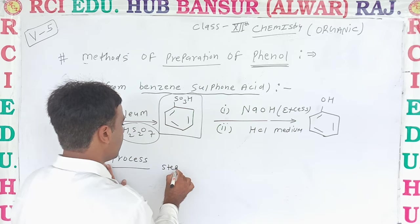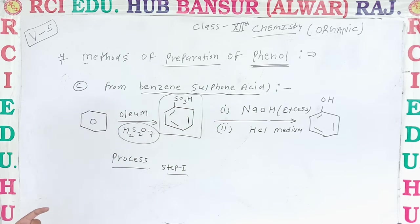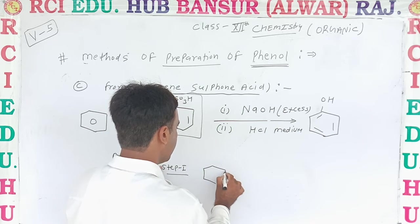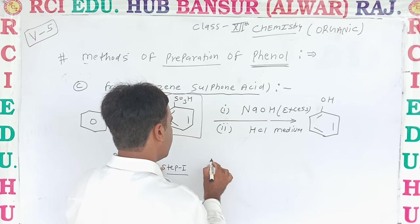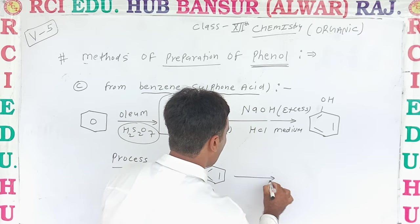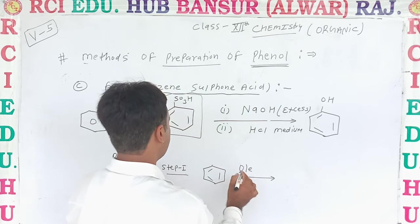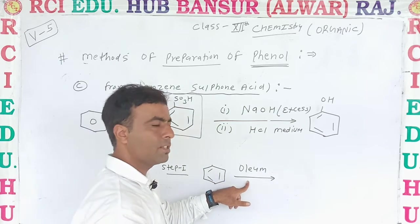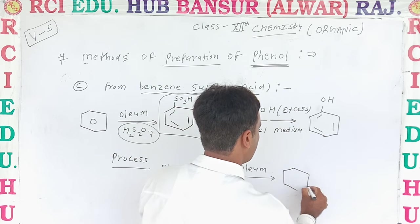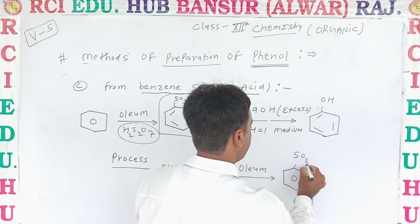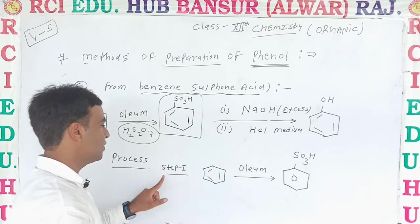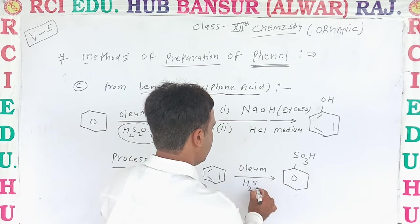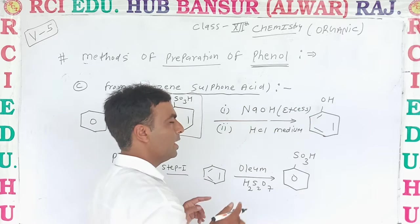Step by step — what will be the process? Step first: you can start from benzene. Benzene in the presence of oleum reacts at normal temperature and pressure, and formation of benzene sulfonic acid takes place. In step one, benzene sulfonic acid is formed in the presence of oleum.